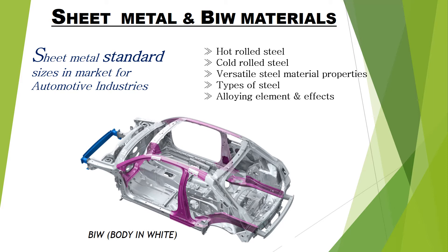We are going to learn about hot rolled steel, cold rolled steel, and the versatile properties of sheet metal, as well as types of steel and alloying elements and their effects — which are very much required for grading steel materials and for increasing strength, hardenability, reducing ductility, and reducing stresses in components. Alloying elements are very important in sheet metal.